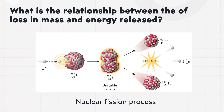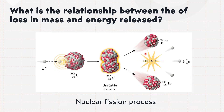So we ask ourselves: what is the relationship between the loss in mass and energy released? After the uranium is bombarded by the neutron and becomes an unstable nucleus, the unstable nucleus splits into two or more lighter nuclei. In this process we can see two other nuclei while releasing three neutrons, and energy is actually being released. So what is the relationship, and how does it relate?